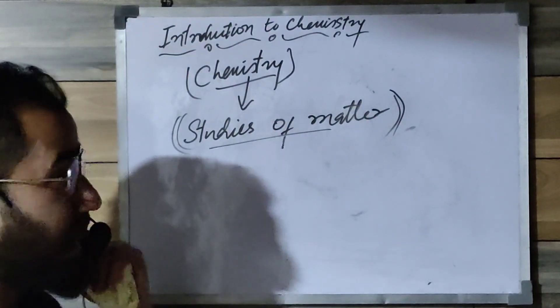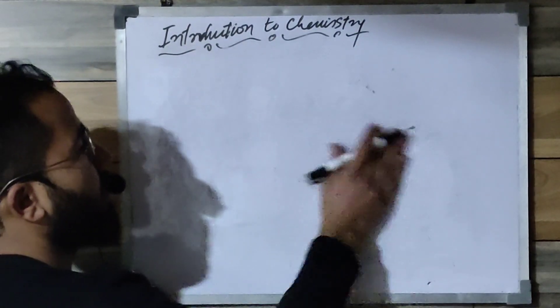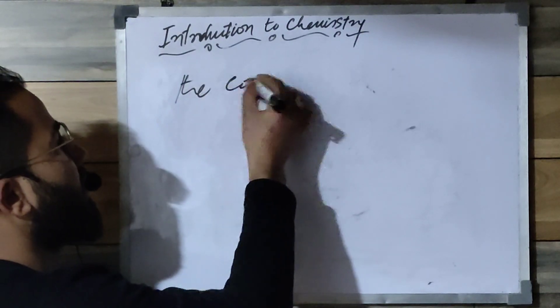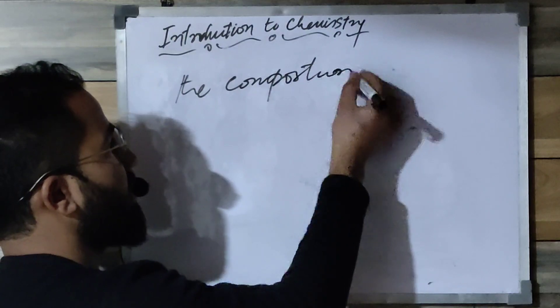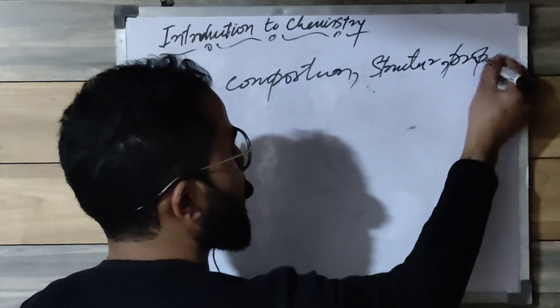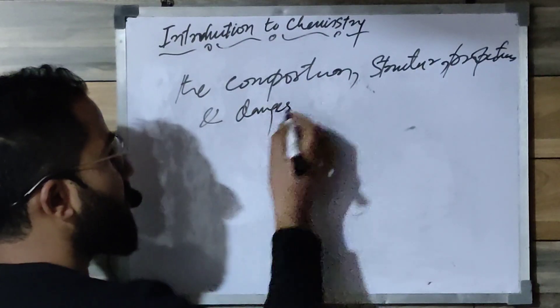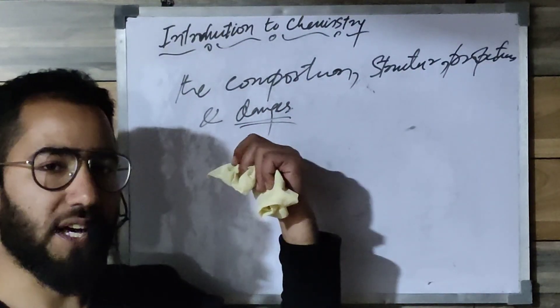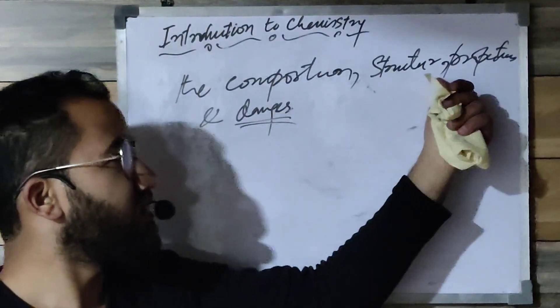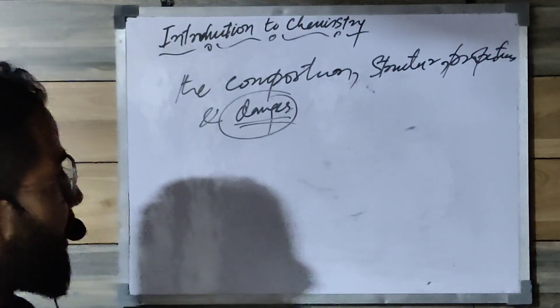Chemistry is the studies of matter, but if we broadly try to elaborate this definition, I will write an elaborative definition here. That will include: composition, structure, properties, and changes. So it is that branch of science which deals with the studies of matter — its composition, its structure, its properties, and the changes occurring in the matter. I will try to explain that to you, my dear students.